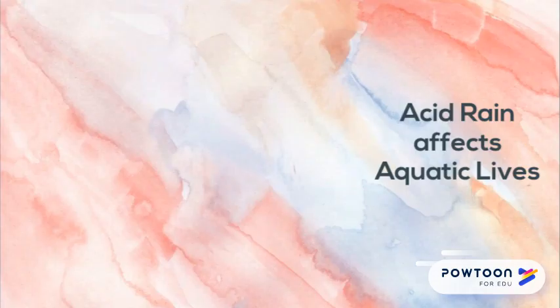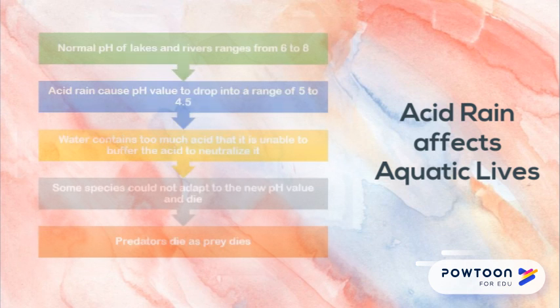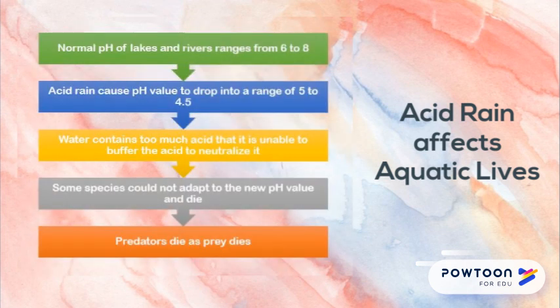So, how does acid rain affect aquatic lives? Well, the normal pH of lakes and rivers ranges from 6 to 8. However, when acid rain mixes with the water in lakes and rivers, the pH value drops to a range of 5 and below.